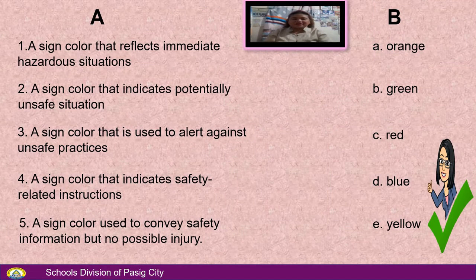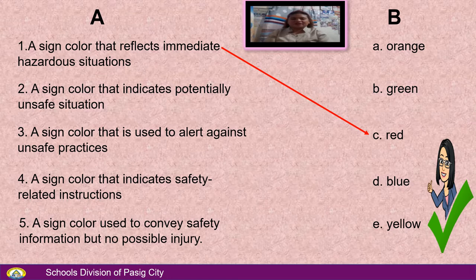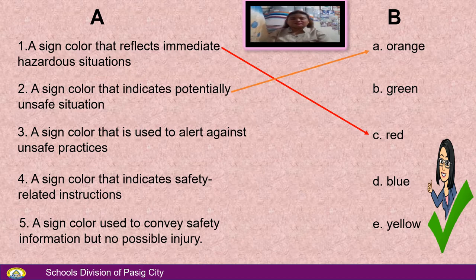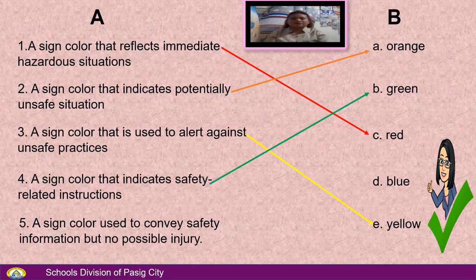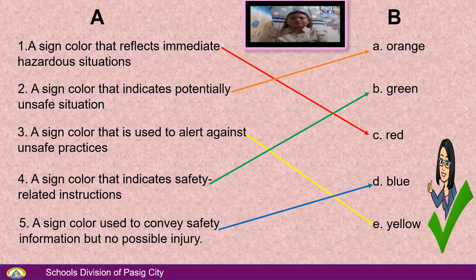Number 1: Assign color that reflects immediate hazardous situations. Answer: Red. Number 2: Assign color that indicates potentially unsafe situation. Answer: Orange. Number 3: Assign color that is used to alert against unsafe practices. Answer: Yellow. Number 4: Assign color that indicates safety-related instructions. Answer: Green. Number 5: Assign color used to convey safety information but no possible injury. Answer: Blue.